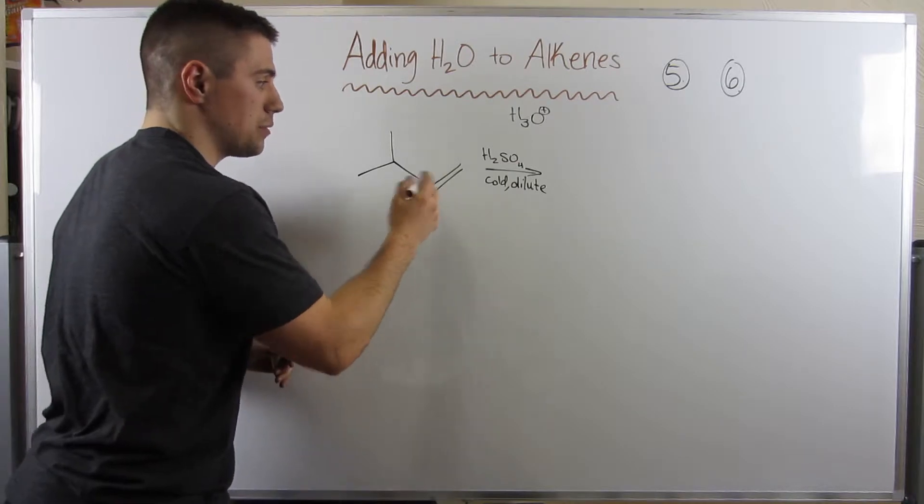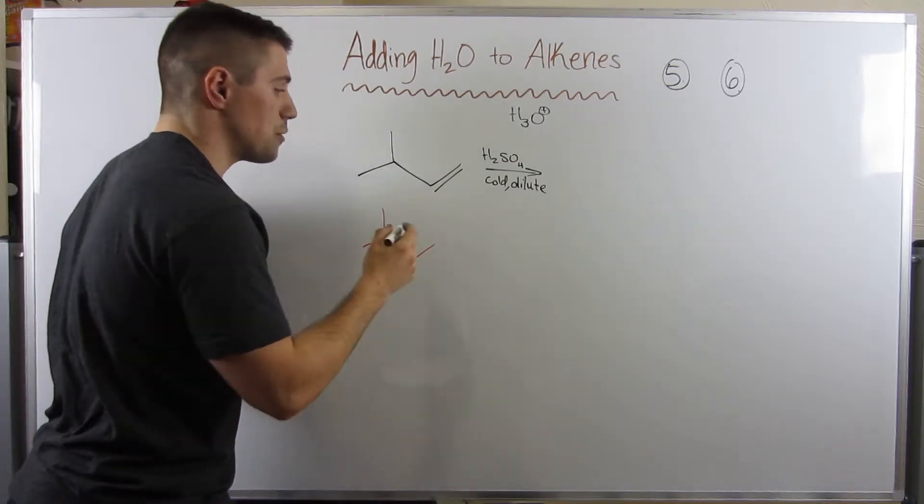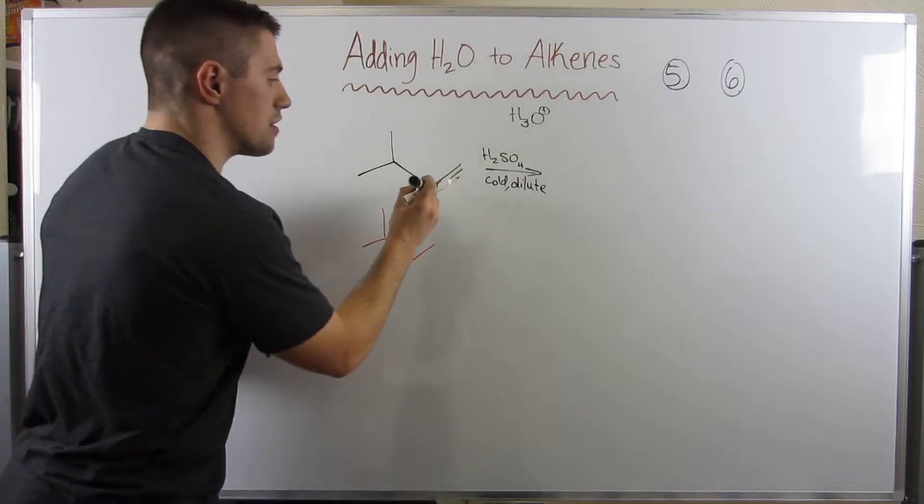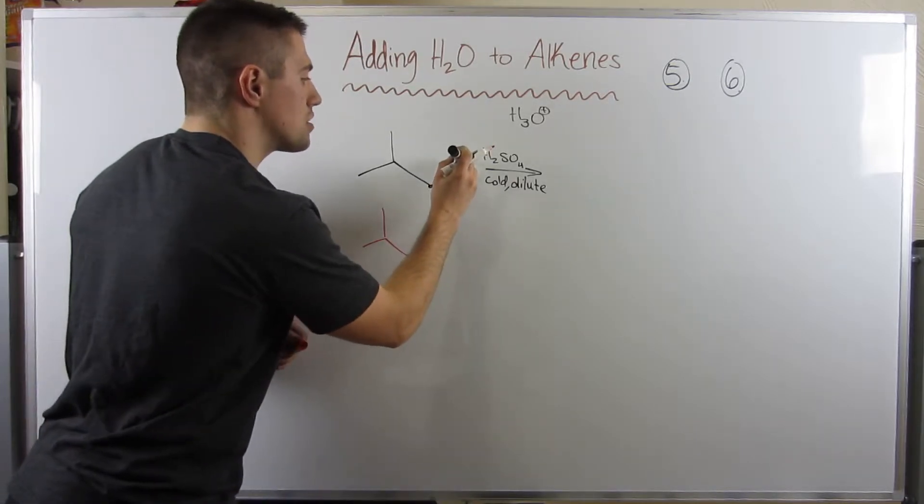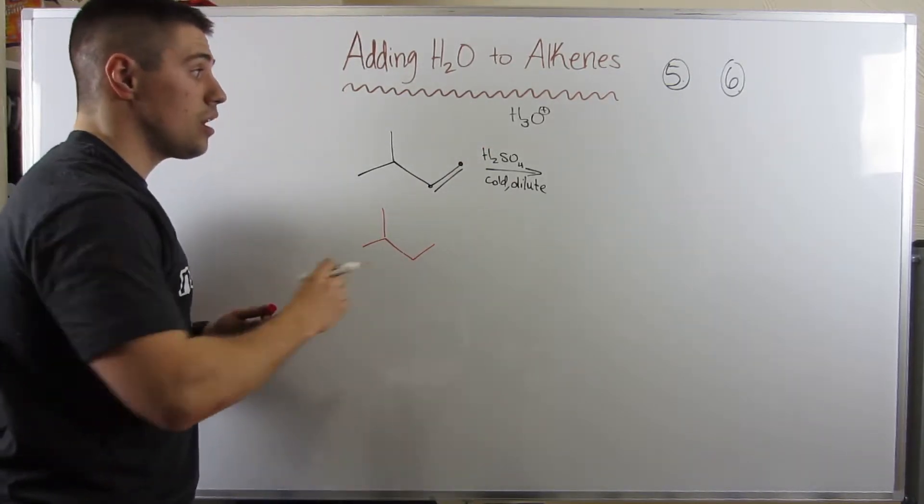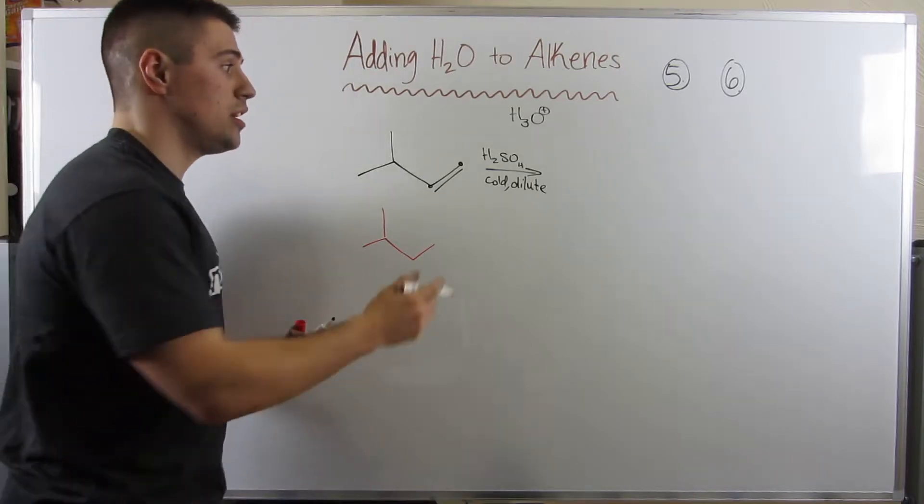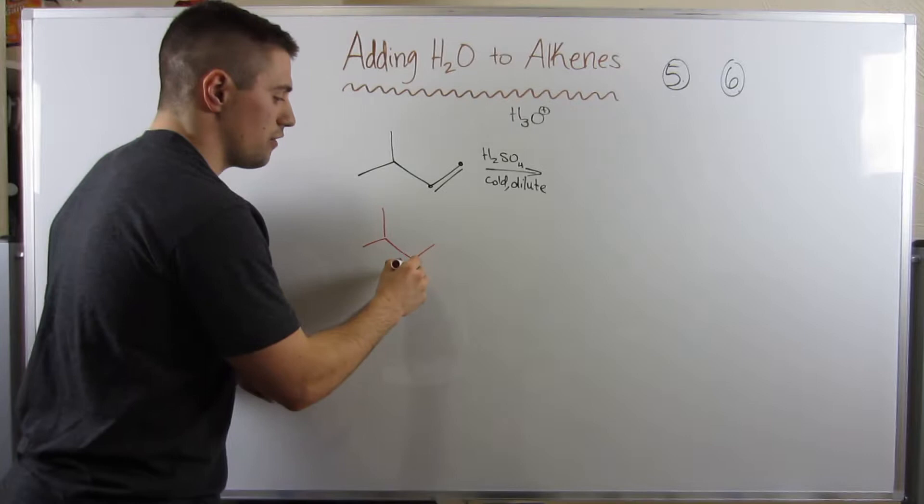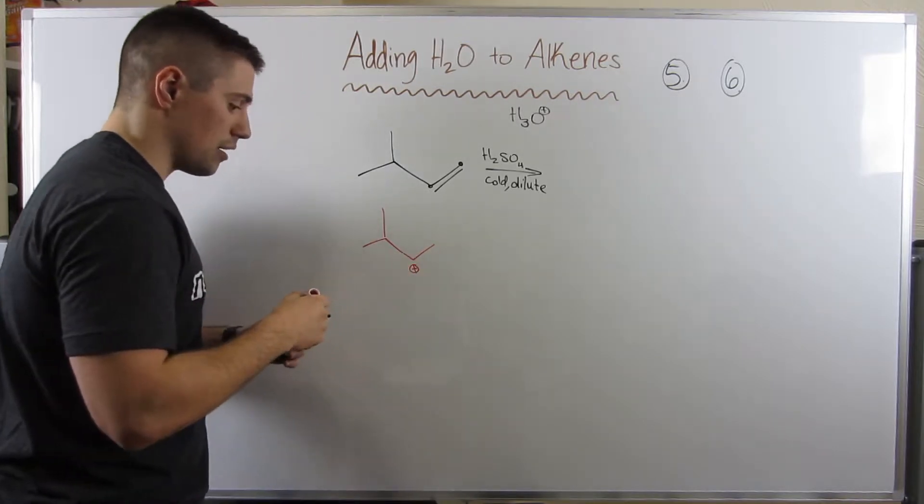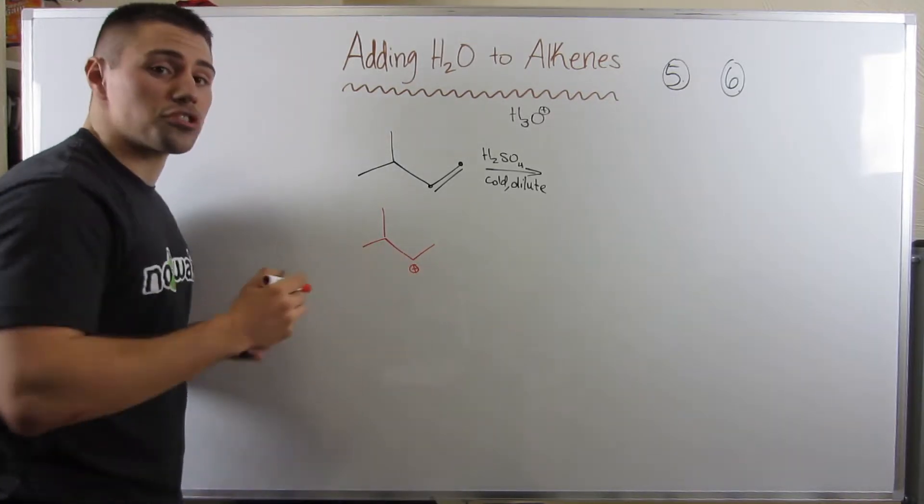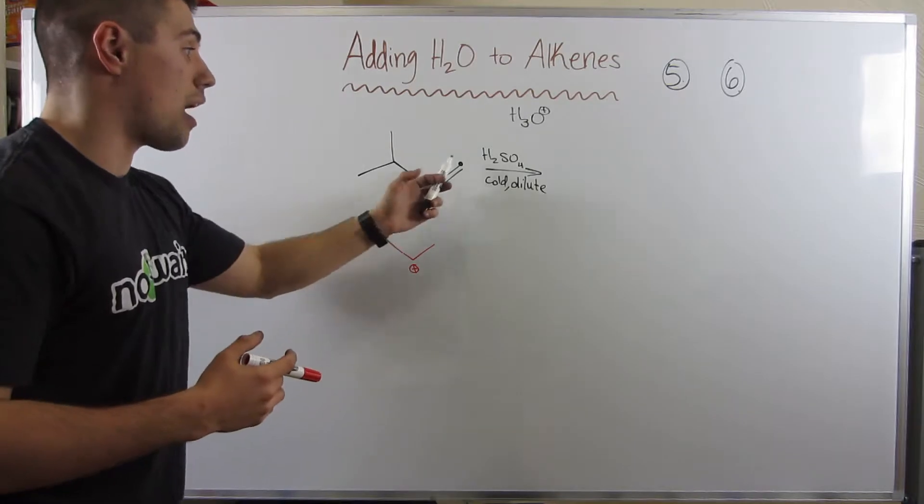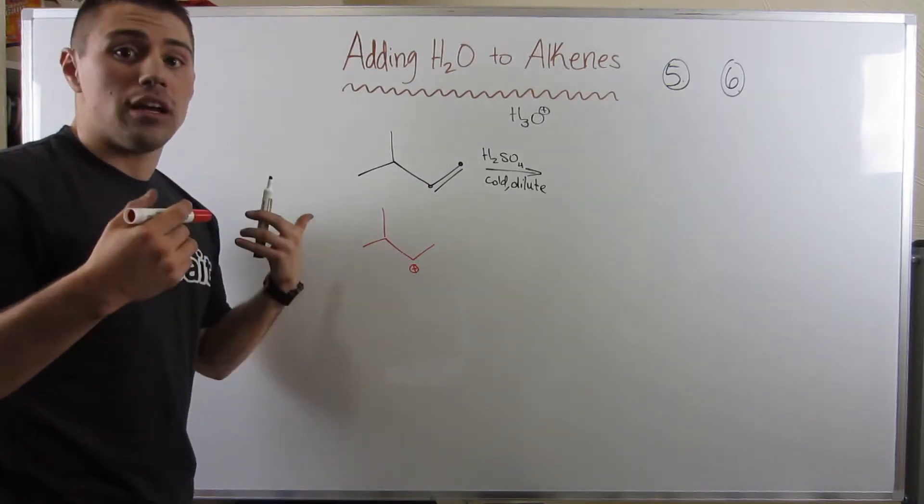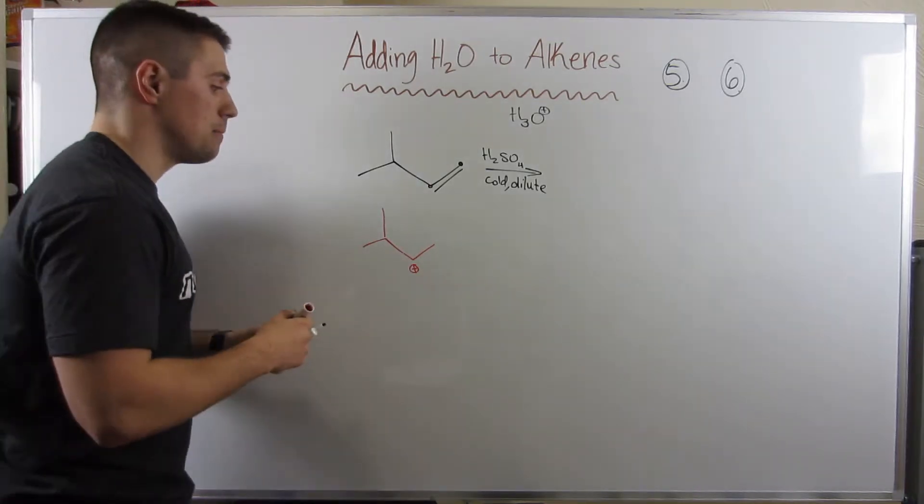So he would grab H+. We would initially have to pick, do we form this carbocation or this carbocation? Obviously, we pick the more stable one. We give the hydrogen to the primary carbon. We leave our secondary carbocation without a bond because he's the more stable carbocation of our two options. Then we have water attack, right?